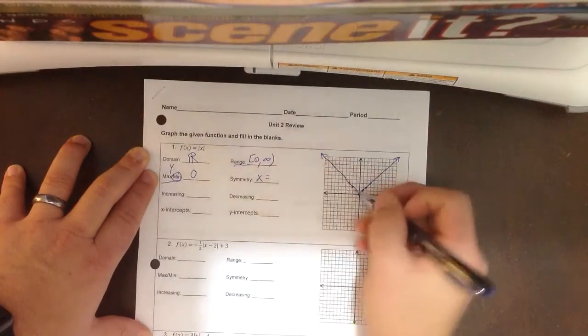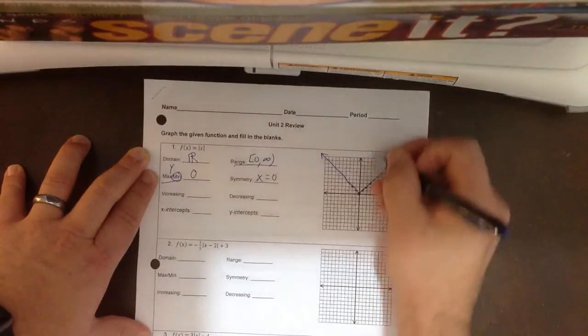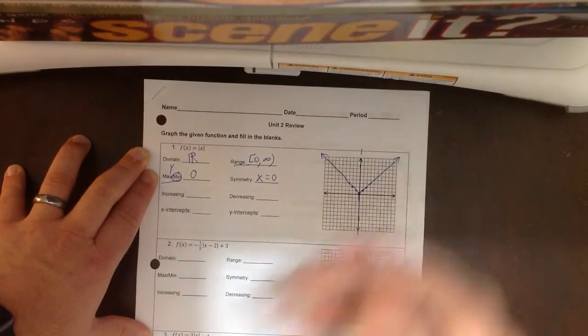Symmetry is going to be x equals, and it comes from the vertex, so 0. This is my line of symmetry right here.